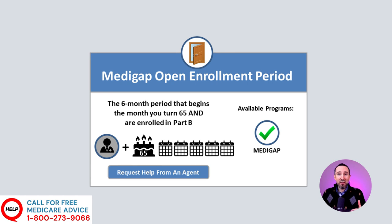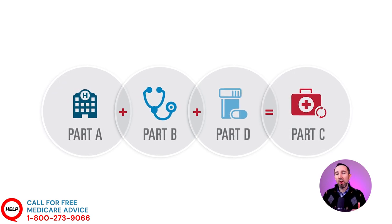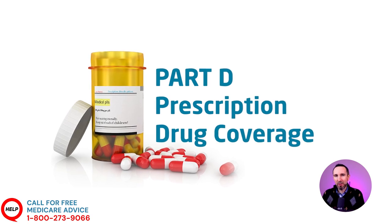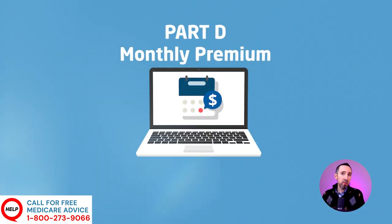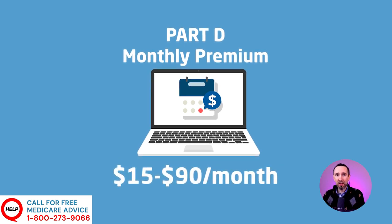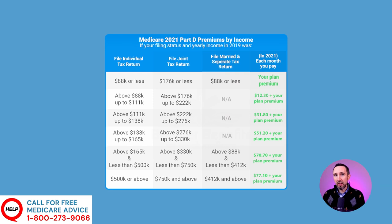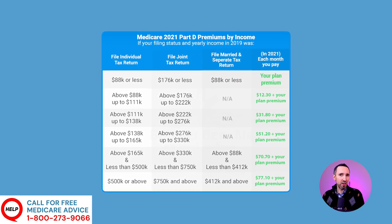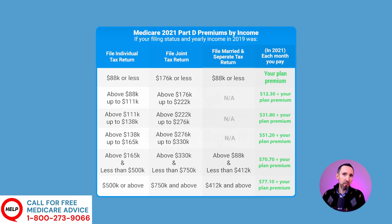Before moving on to Part C, let's talk about Part D, the prescription drug portion of Original Medicare. You can add Part D to your Original Medicare. Medigap plans do not include prescription drug coverage, so you may also want a Part D plan. The monthly premium can be between $15 and $90, depending on the plan, and some medicines may require a co-pay. If your income is over $88,000 individually or $176,000 on a joint return, you may also pay an additional Medicare premium. Speak with a licensed advisor to confirm which plans cover your specific medications.